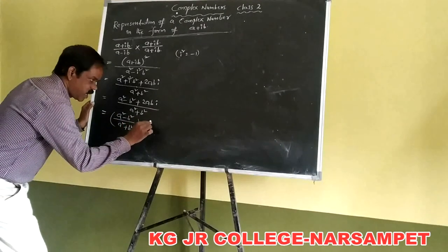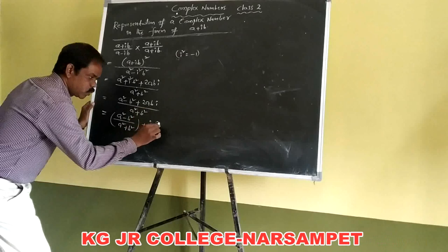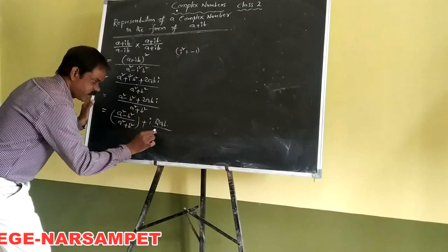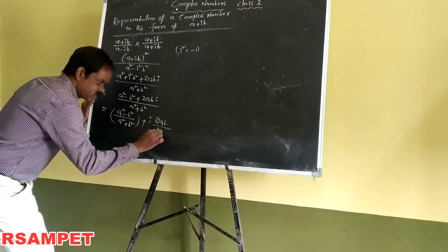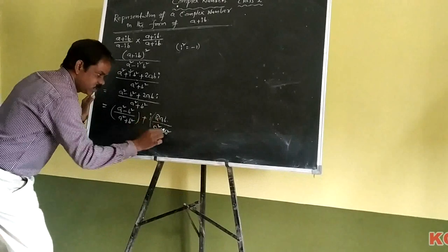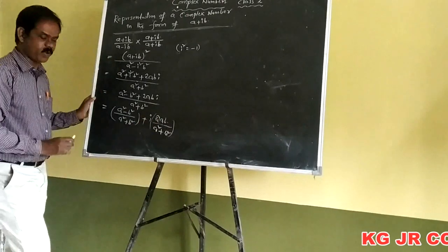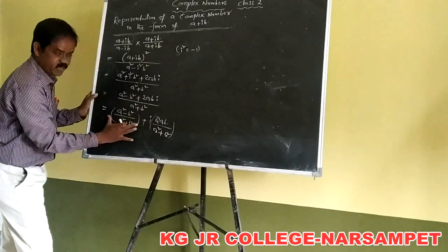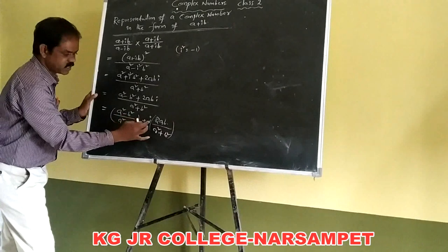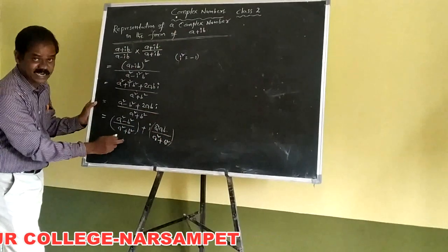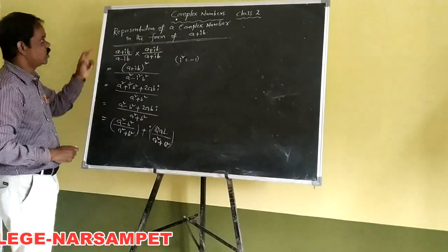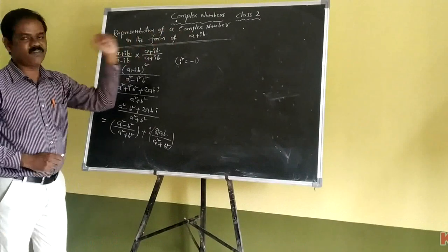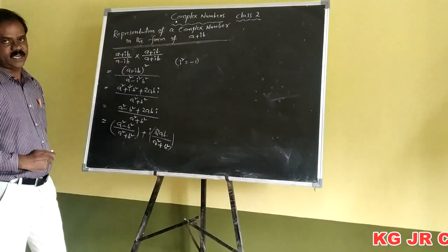And plus i into 2AB over A squared plus B squared — this is called the imaginary part. Now it is in the form of A plus iB.